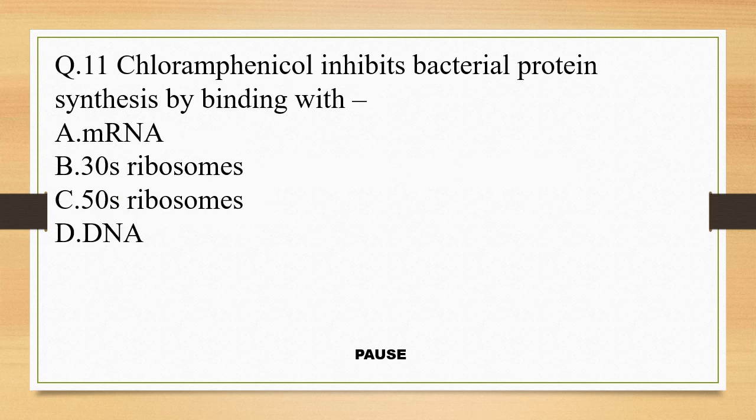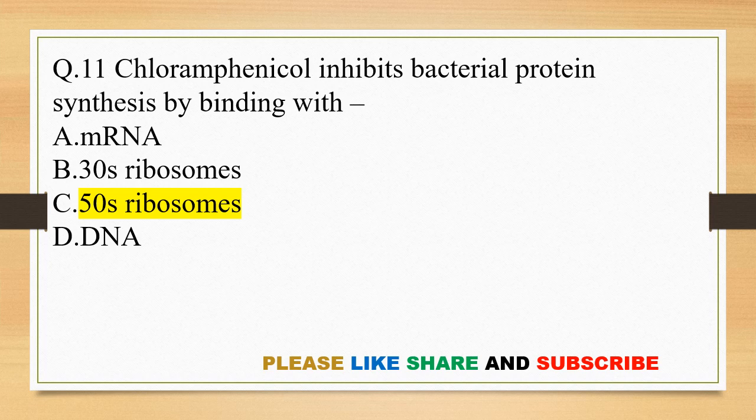Question 11. Chloramphenicol inhibits bacterial protein synthesis by binding with: option A, mRNA; option B, 30S ribosomes; option C, 50S ribosomes; and option D, DNA. And the right answer is option C, 50S ribosomes. So chloramphenicol inhibits bacterial protein synthesis by binding with 50S ribosomes.